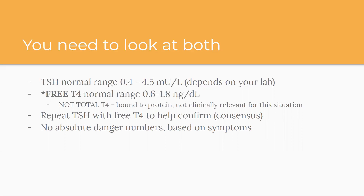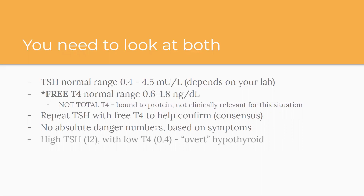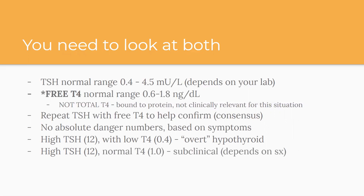The extreme case of hypothyroid is myxedema coma — very uncommon, presenting with mental status changes, extreme lethargy, hypothermia. They'd present to the ER, not your clinic. There's no highest dangerous TSH number. There are two main scenarios: a high TSH with a low T4, which is overt hypothyroidism, versus a high TSH — say 12 — with a normal T4 and no symptoms, which is considered subclinical hypothyroidism.